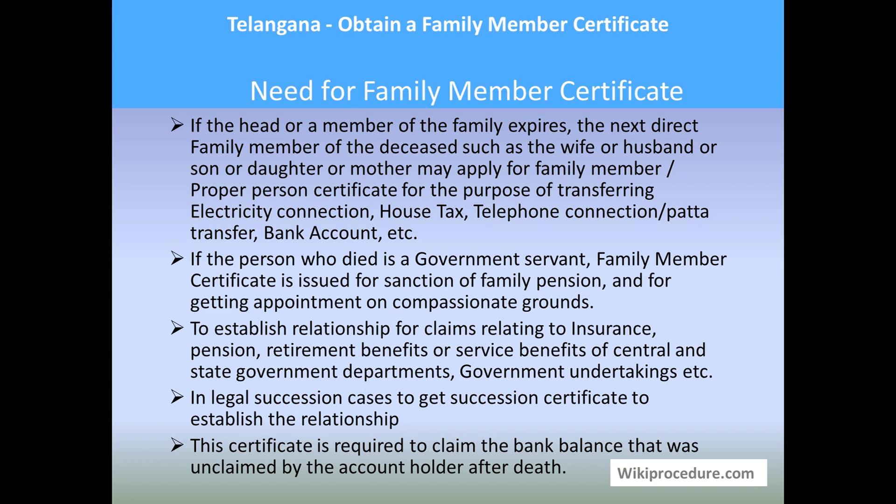To prove to the government that the applicant is legally fit for this, if the person who died is a government servant, the family member certificate is issued for sanction of family pension and for getting appointment on compassionate grounds — for example, if somebody dies, the son or wife might get the job while he was in service. This certificate is also required to establish relationship for claims relating to insurance, pension, retirement benefits, or service benefits of central and state government departments and government undertakings.